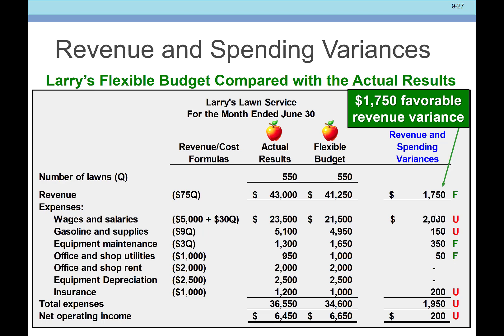Taking the $43,000 actual revenue and dividing by the 550 actual lawns gives us $78.18 per lawn. So we start to look at that and ask: how were we able to charge $78.18 per lawn when we're priced at $75? We call a team meeting and ask how that worked.